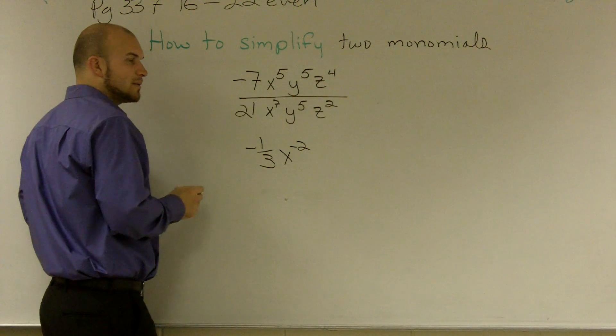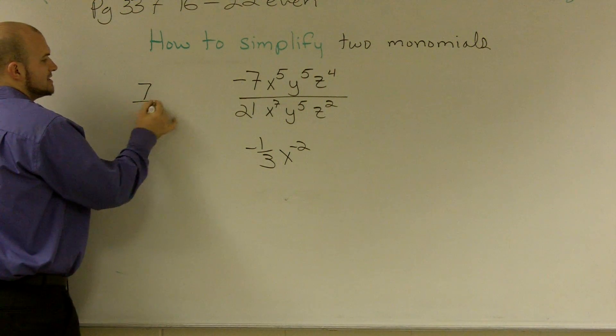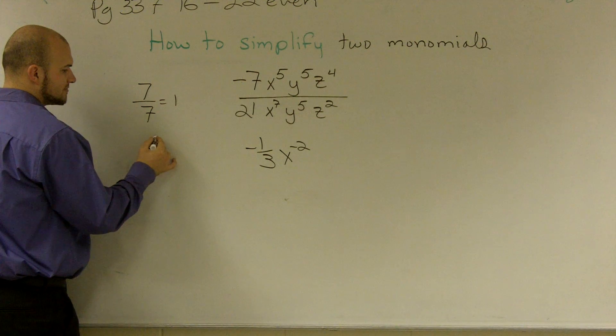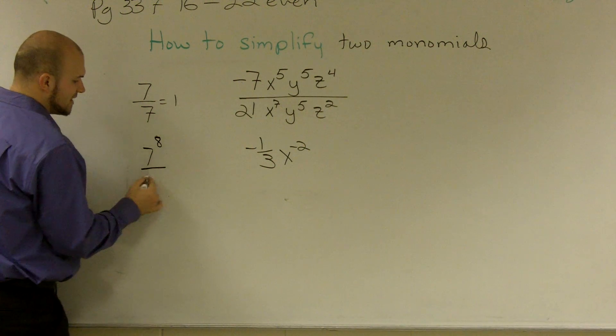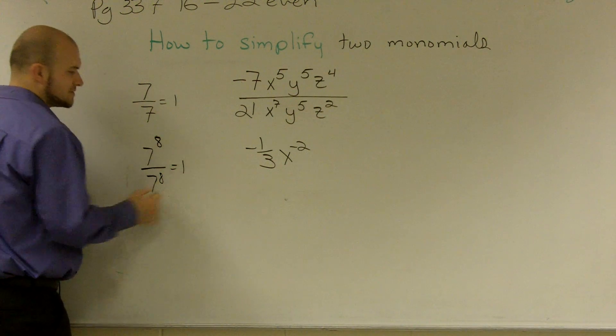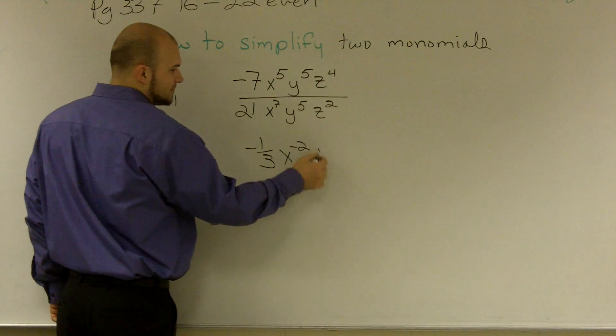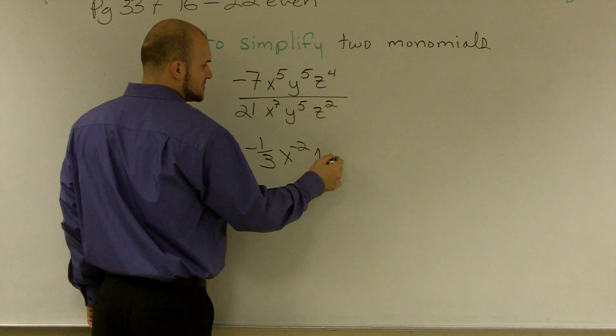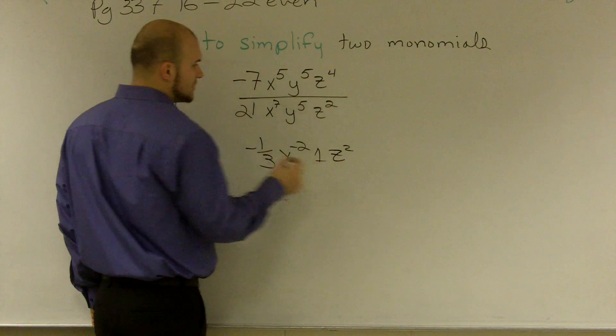y to the 5th divided by y to the 5th. We know that 7 divided by 7 equals 1. So y to the 5th divided by y to the 5th is also going to equal 1. And z to the 4th divided by z squared is going to be z squared.